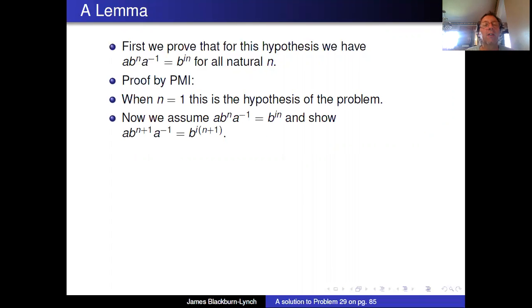So next, move on to the inductive hypothesis. We assume it is true for n. So ab^n a^(-1) = b^(in). Notice that is what we're trying to prove. And show the same thing except replace n with n+1.